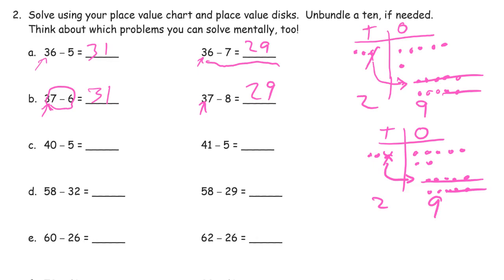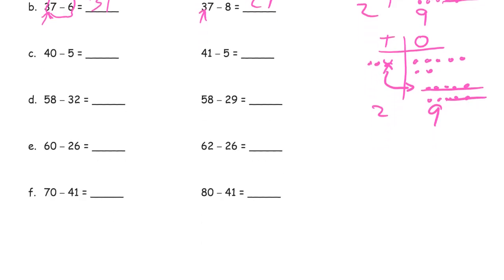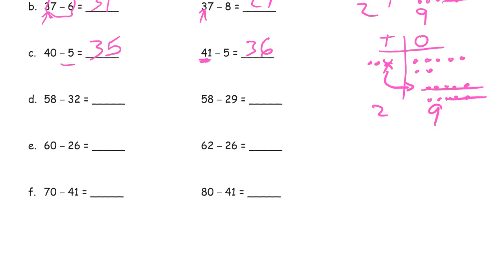I'm going to look at the rest of them thinking that same way. 40 minus 5 is 35. And 41 minus 5 — well, if our minuend is 1 more, then our difference is going to be 1 more: 36. If we start out with a little bit more, we're going to end up with a little bit more, as long as the subtrahend is the same — which it is, they're both minus 5.